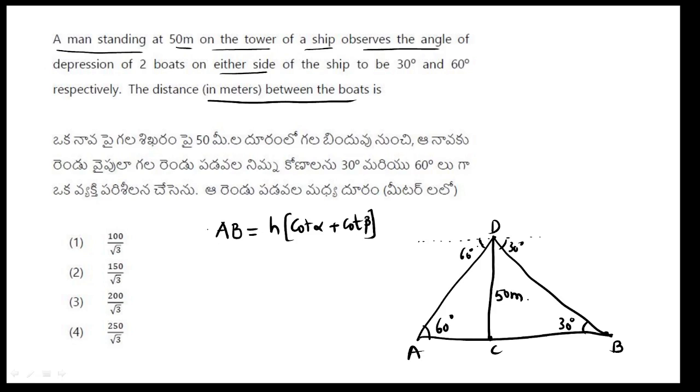I am going to solve the formula in single step. First, height is 50 meters, cot alpha, cot 30, cot 30 is root 3, cot 60 is 1 by root 3.